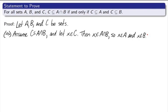If you look, however, we're actually already finished. We assumed that x was an element of C, and we wanted to show that x was an element of A, which we did. We also wanted to show that x was an element of B, which we did. One line. Not bad.